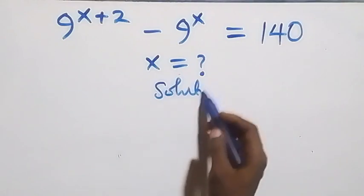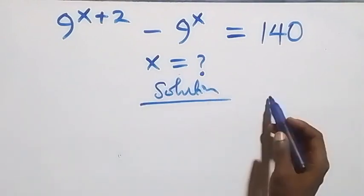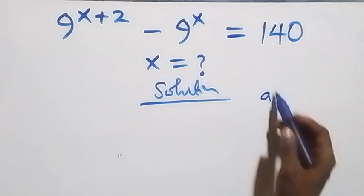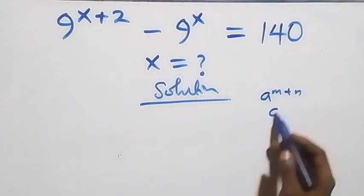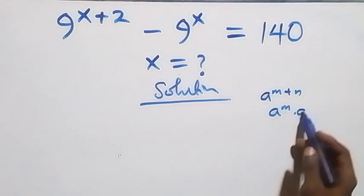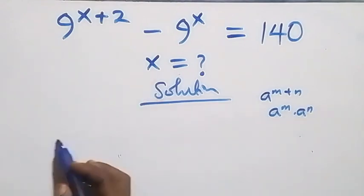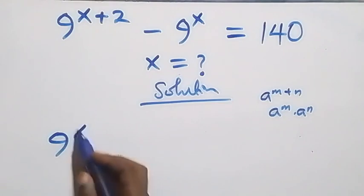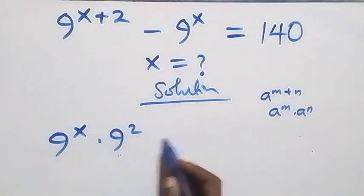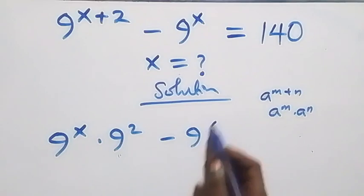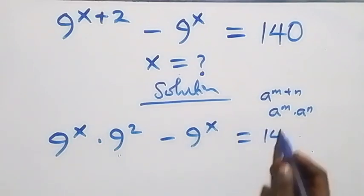Solution from here. Looking at what we have, we apply the law of indices: e raised to power n plus n is the same as e raised to power n times e raised to power n. This becomes n raised to power x times n squared minus n raised to power x equals 140.